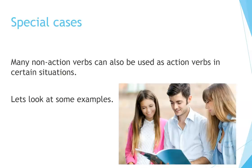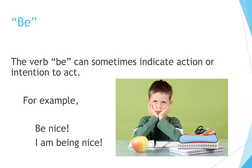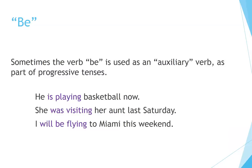Special cases. Many non-action verbs can also be used as action verbs in certain situations. The verb be can sometimes indicate action or intention to act — for example: 'Be nice' / 'I am being nice.' Also, be is used as an auxiliary verb in progressive tenses: 'He is playing basketball now.' 'She was visiting her aunt last Saturday.' 'I will be flying to Miami this weekend.'